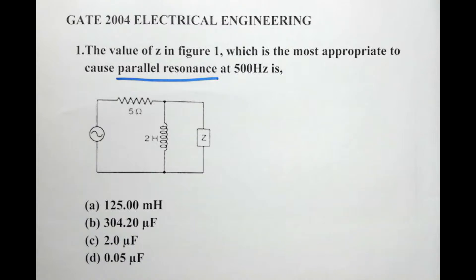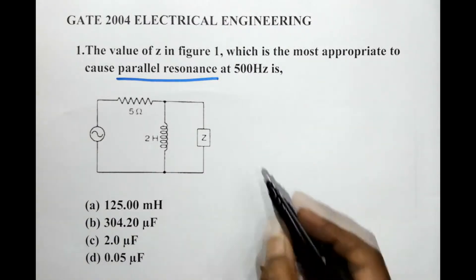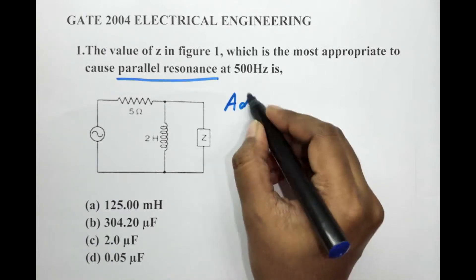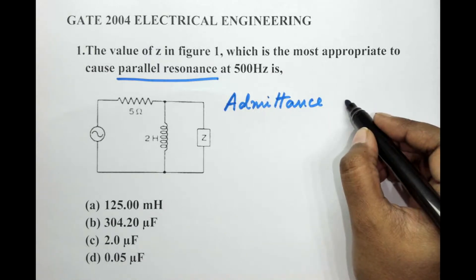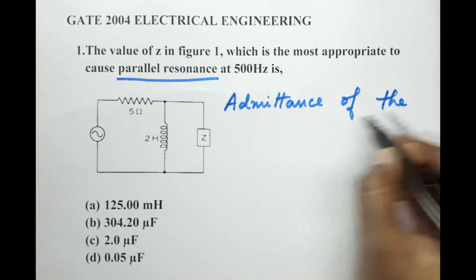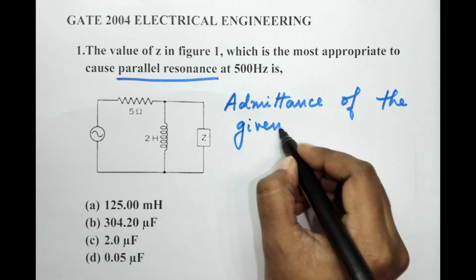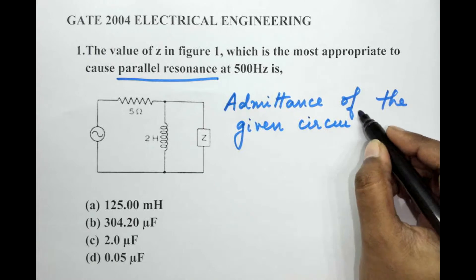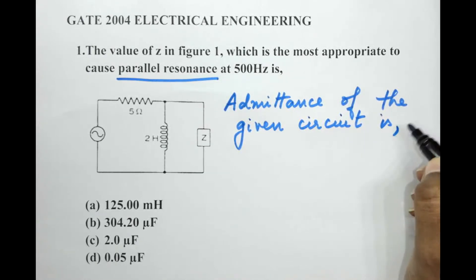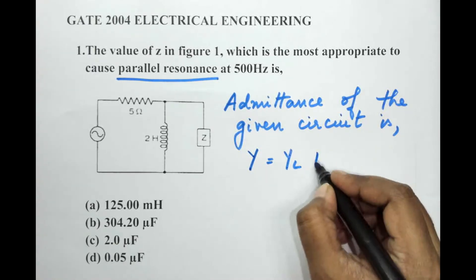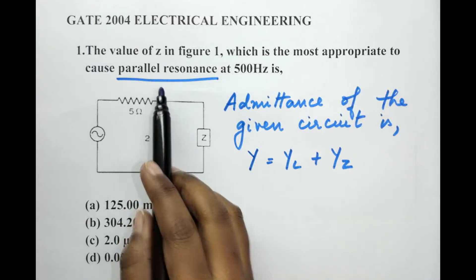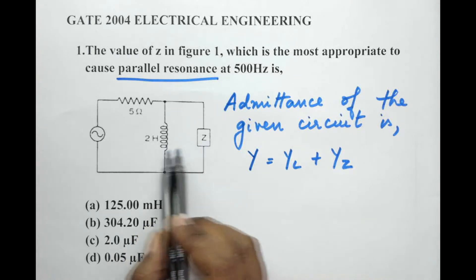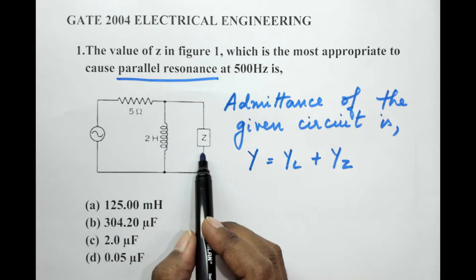So let's take the admittance of this circuit and write down the equation for the circuit admittance. Let's call this Y. So Y would be equal to YL plus YZ. Now note that we are going to find out the parallel resonance, so we will have to consider these two elements alone, the inductor and Z.